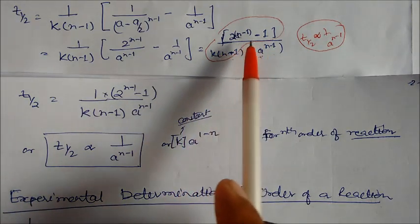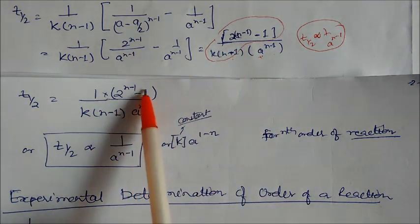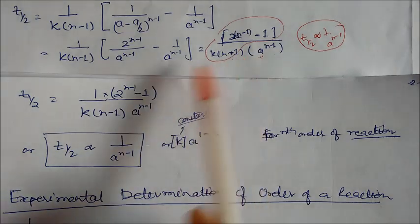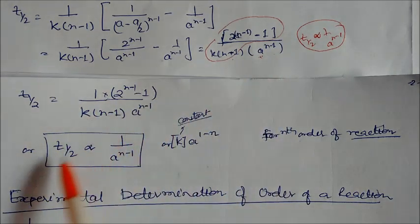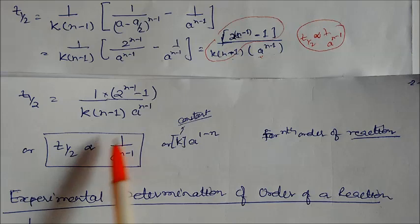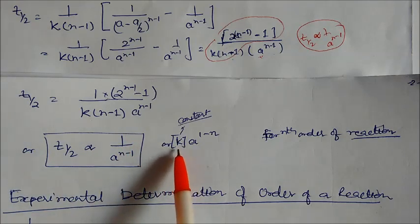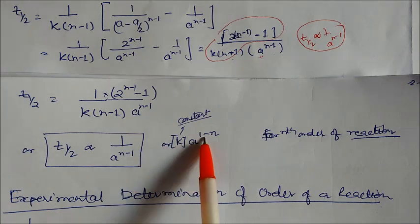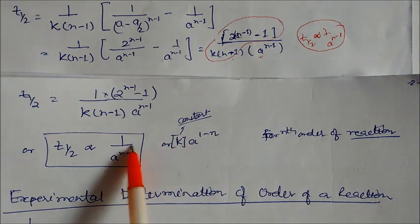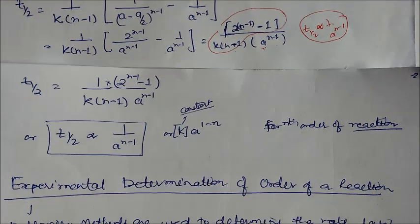Rearranging the half-life expression: t-half equals (2^(n-1) minus 1) divided by k(n minus 1) times a to the power (n minus 1). This can also be written as t-half proportional to a to the power (1 minus n). This is the half-life relationship for the nth order reaction.